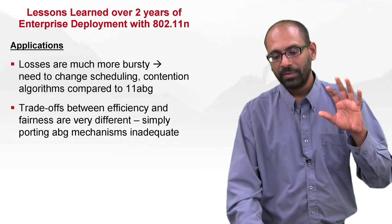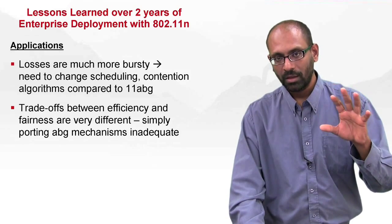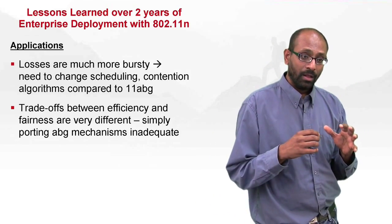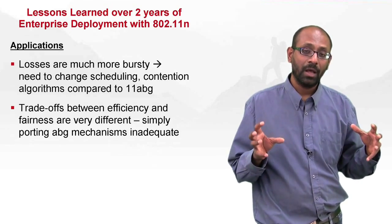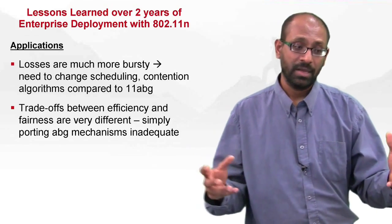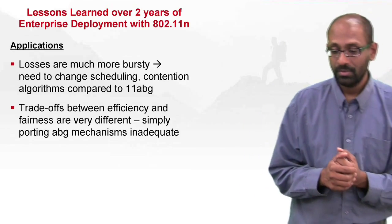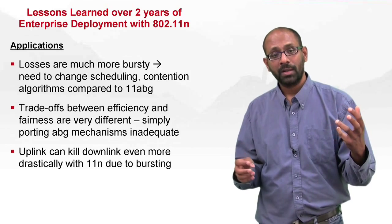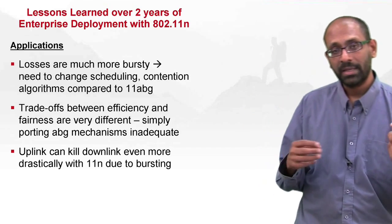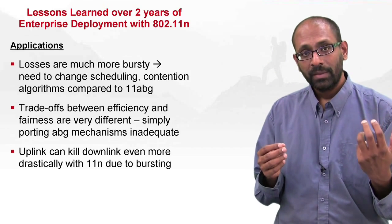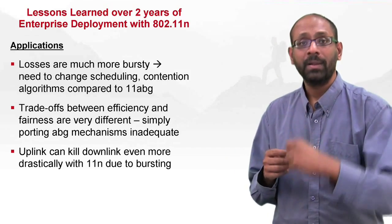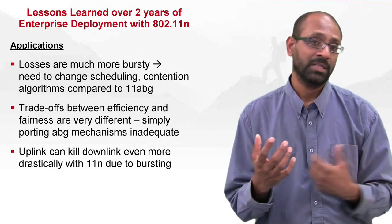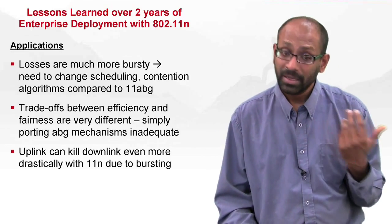The trade-off between efficiency and fairness is very different with 11n. Because of the bursty nature, as you have a large number of devices — and the number of devices increases over time — uplink can kill downlink even more. In a companion video I talked about how uplink kills downlink performance. Combine that with the ability of uplink traffic to start bursting: not only do uplink devices get more of the airtime, they start bursting more, so downlink can get completely starved.